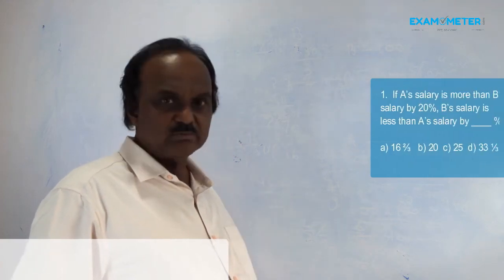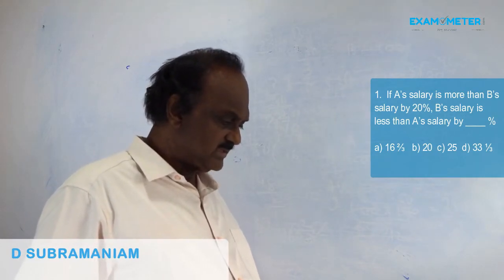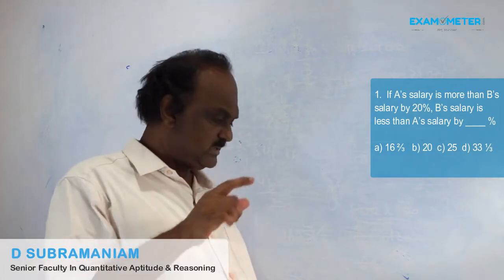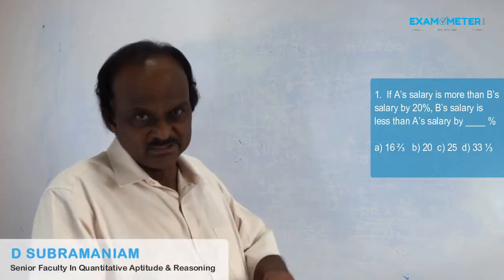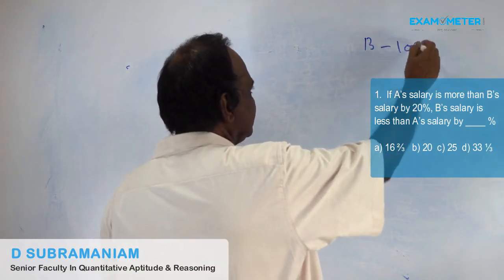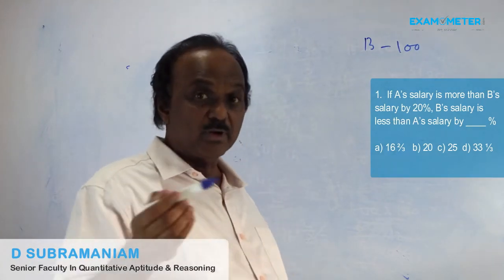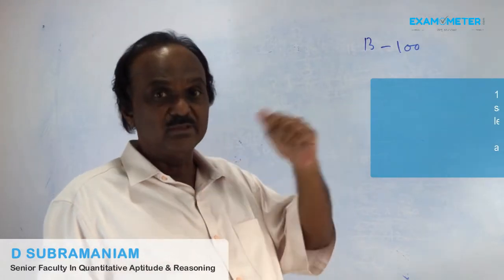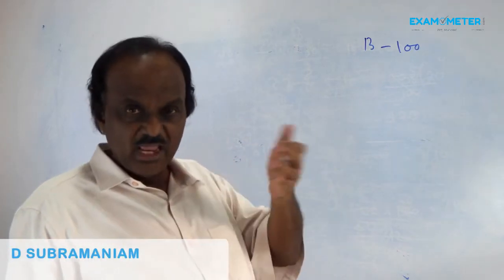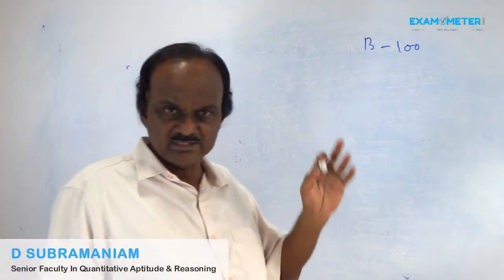A's salary is more than B's salary by 20%. B's salary is less than A's salary by how much percent? A's salary is more than B's salary by 20%, so B's salary we will take it as 100. Any percentage problem that comes in the examination, start with 100. Different teachers follow different techniques — some start with 1000, some with X. I am starting with 100. Percent means 100.